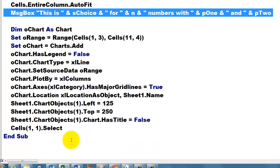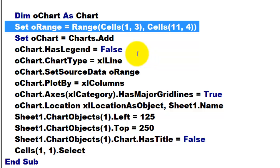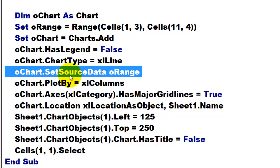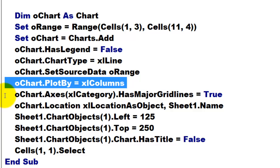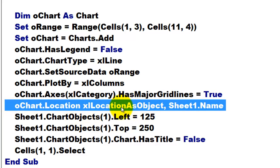Then we create a chart. Declare a variable of the chart type. Set oRange to cells 1,3—those are the bins—up to 11,4—those are the frequencies. Add a chart to the collection of charts. We don't want a legend probably. We want probably a line chart, whatever you choose. Set the source data of oChart to oRange. Make sure that this is not a property, so don't put an equal sign, but you have to put source as an argument immediately after the space. Plot by the columns probably. Make sure that the category axis has major grid lines if you want that.